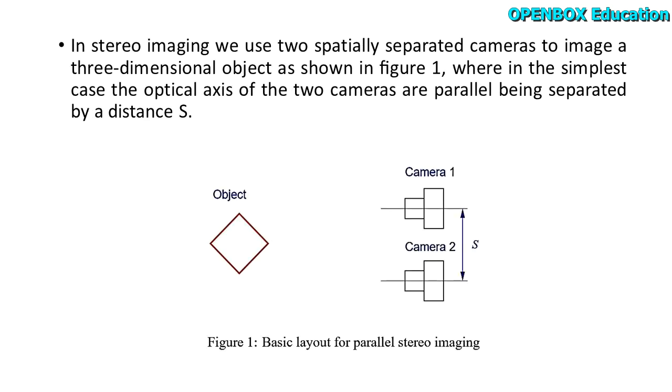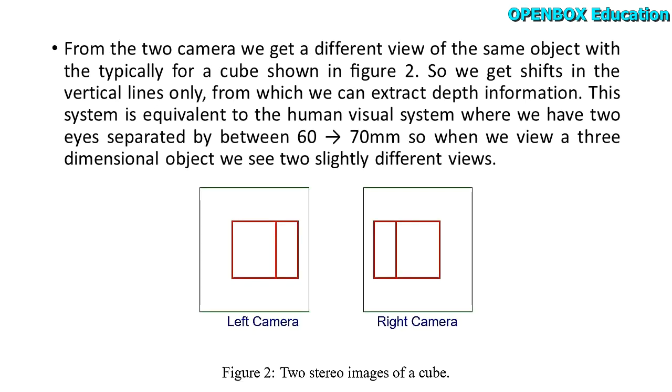In stereo imaging we use two spatially separated cameras to image a three-dimensional object as shown in Figure 1, where in the simplest case the optical axis of the two cameras are parallel, being separated by a distance S.